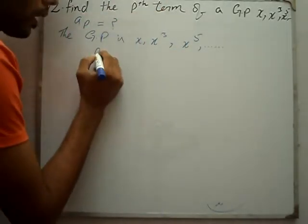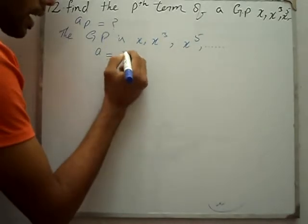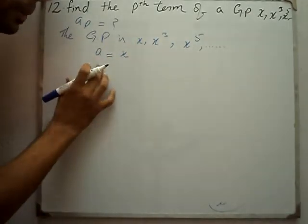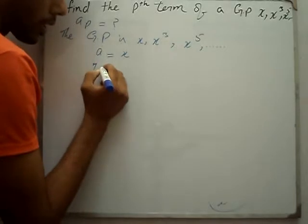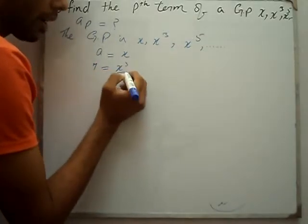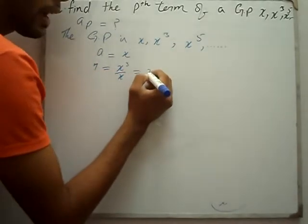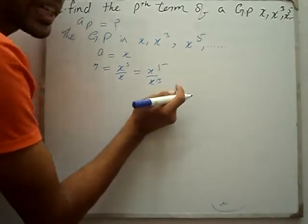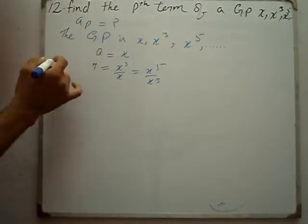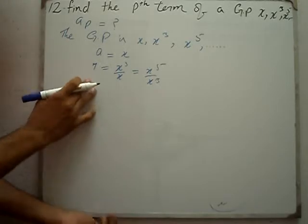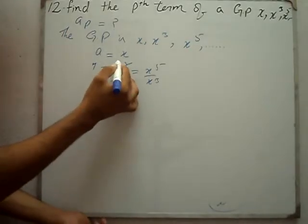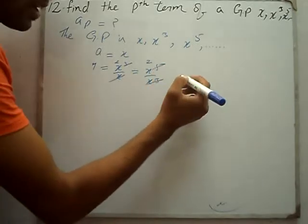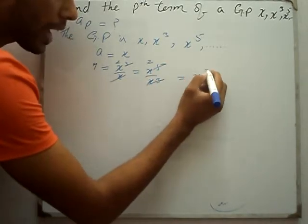So what will A be? A will be x — the first term. R is equal to x³ divided by x, which equals x⁵ divided by x³. Since it is a geometric progression, there is a common ratio. What is the common ratio R? It is x².